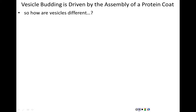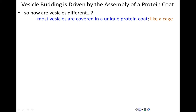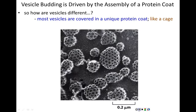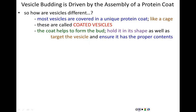How are vesicles unique? Most vesicles are covered in a unique, all-encompassing protein coat — almost like a cage of protein that forms around the vesicle. In electron micrographs, what you see is actually the protein cage; the membrane is deeper inside and the cargo is in the hollow center. Vesicles are referred to as coated vesicles, coated with this protein meshwork.